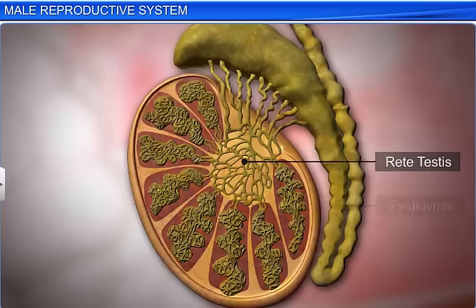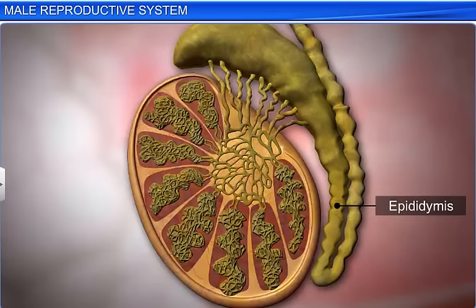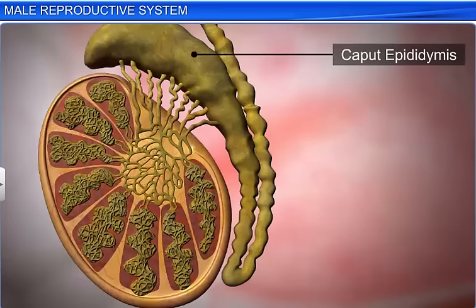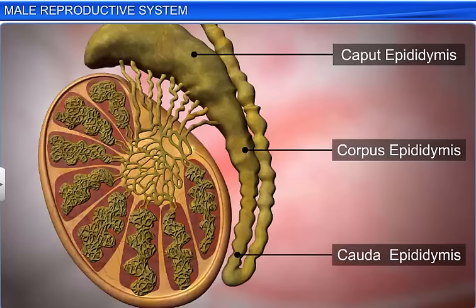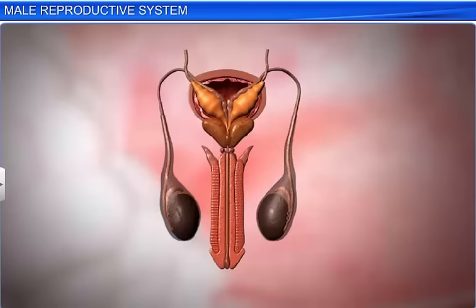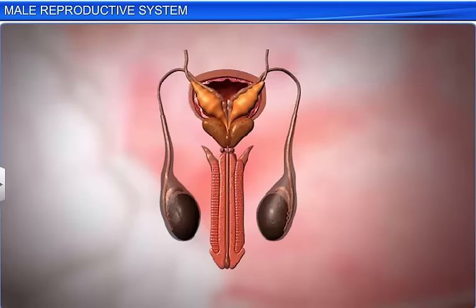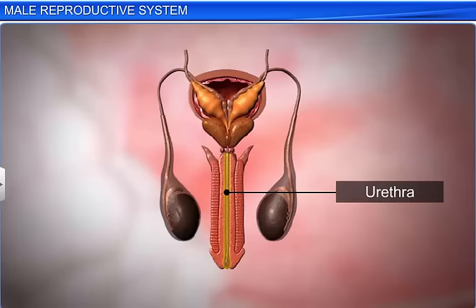They collect sperms and transfer them to the epididymis. The epididymis is a long, narrow, highly coiled tubule present along the posterior surface of the testis. It is divided into three parts: anterior caput epididymis, middle corpus epididymis, and posterior cauda epididymis. The epididymis stores the sperms temporarily and nourishes them. The epididymis leads to vas deferens, which ascends into the abdomen, curves around the ureter, and loops over the urinary bladder. It extends backwards, receives the duct from the seminal vesicle, and finally opens into the urethra as an ejaculatory duct.